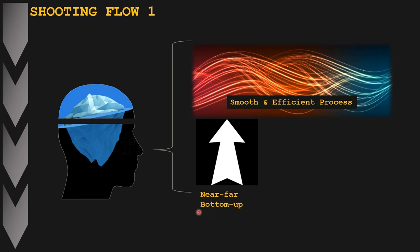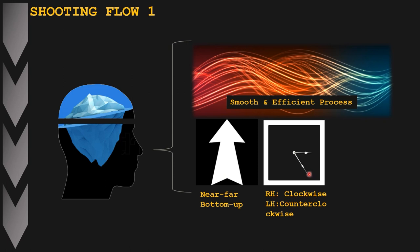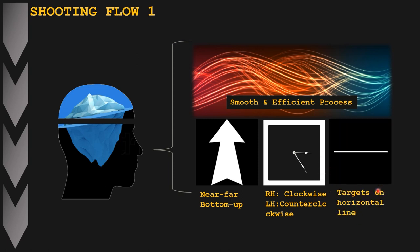That is more difficult if you shoot targets from the top to the bottom. The second principle is that for right-handed shooters, in most cases they have a natural preference for shooting targets from right to left; for left-handed shooters it's inverse. The third principle implies that as much as possible, try to shoot targets located on a horizontal line. These were the three basic principles from the first shooting flow video.